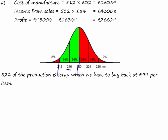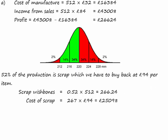Let's see what that means in cash. 0.52 times 512 is 266.24, so that's 267 components, and £94 each is £25,098. So our net profit now is £26,624 minus £25,098, which is actually £1,526.